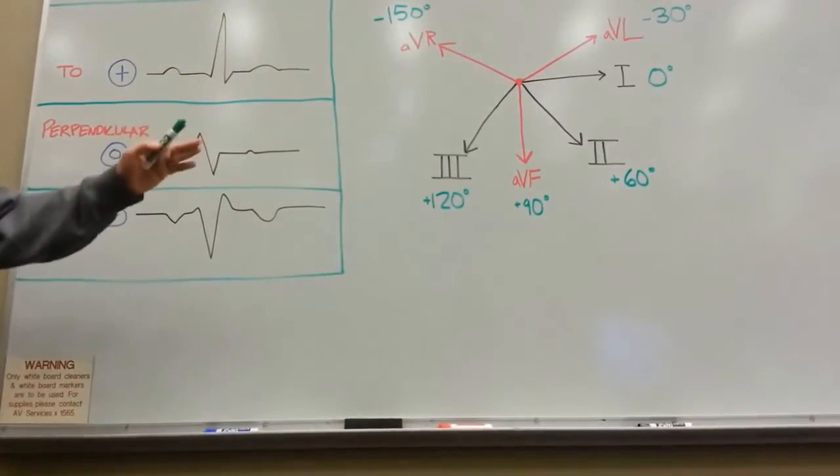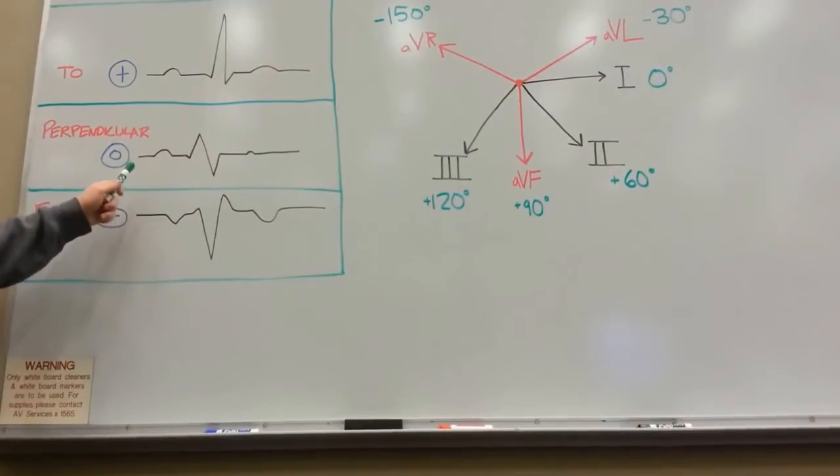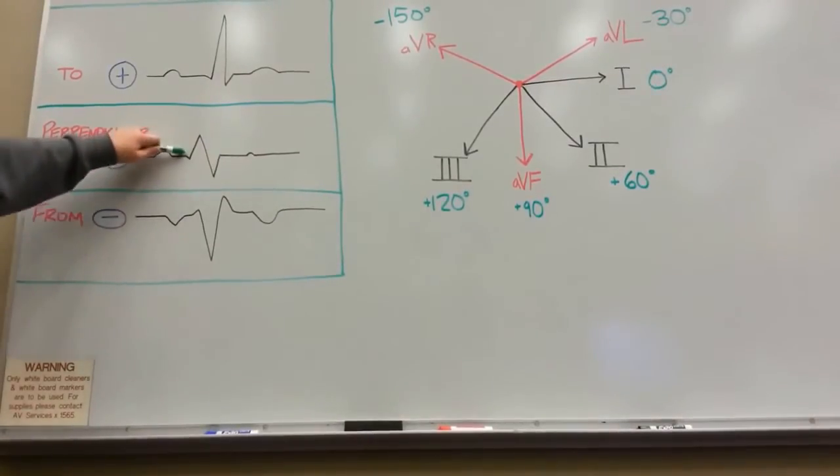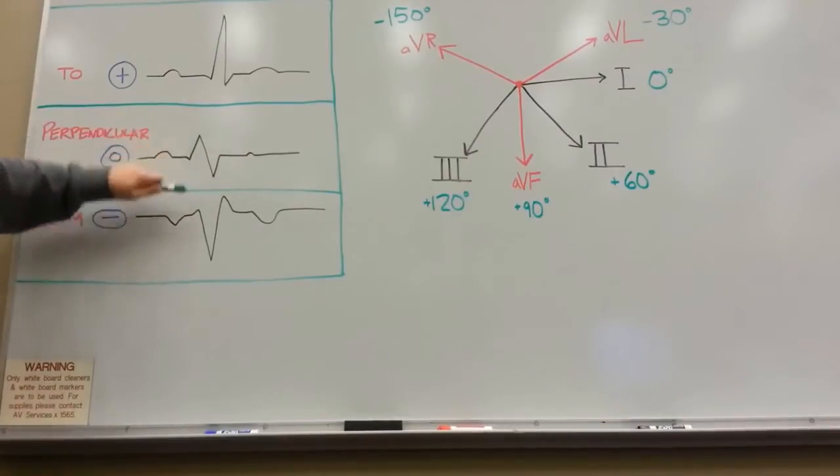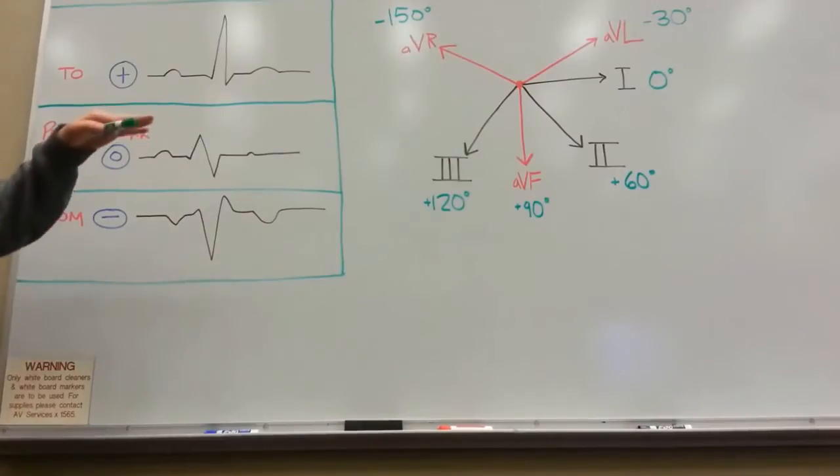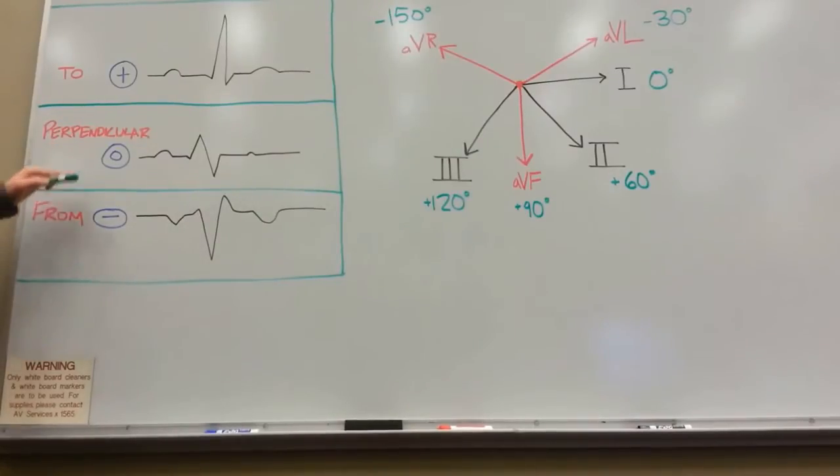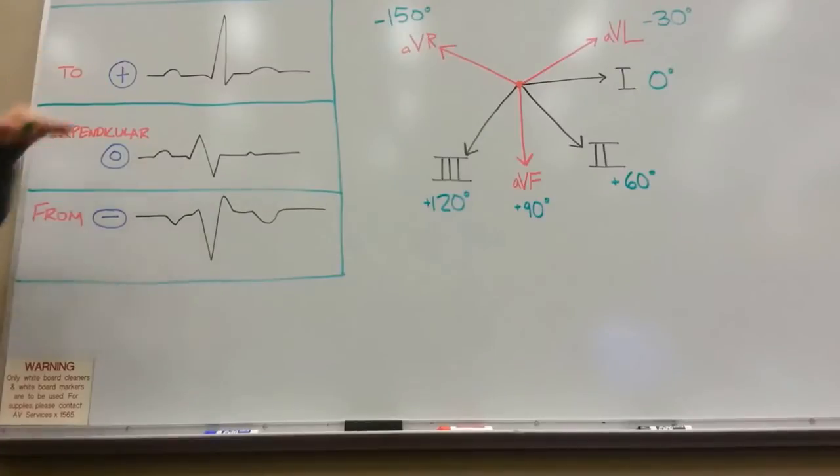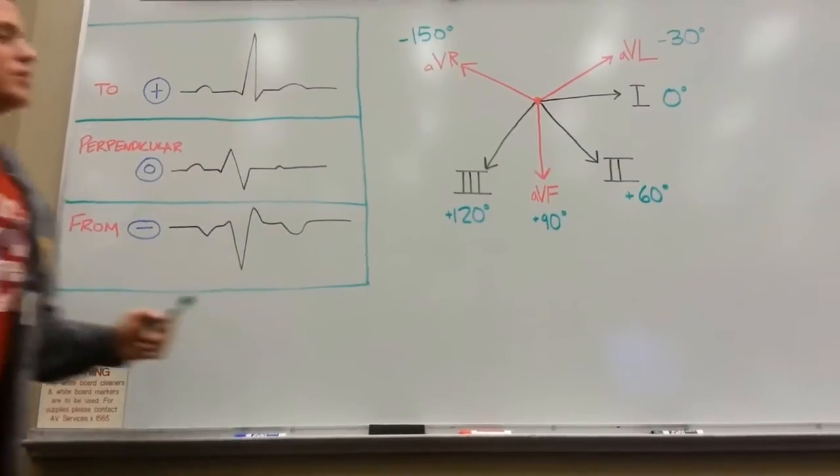If your lead shows a biphasic or null deflection, which means that the positive and negative portions of your QRS deflection are about equal and really cancel each other out, then you'll know that your mean electrical axis will be perpendicular or not parallel with that lead.